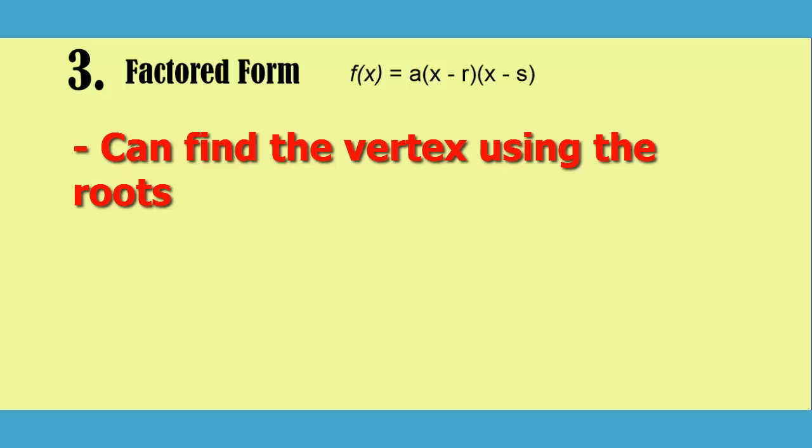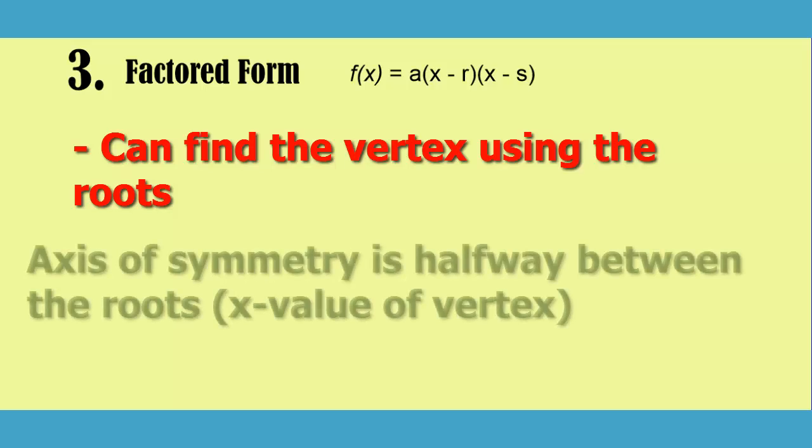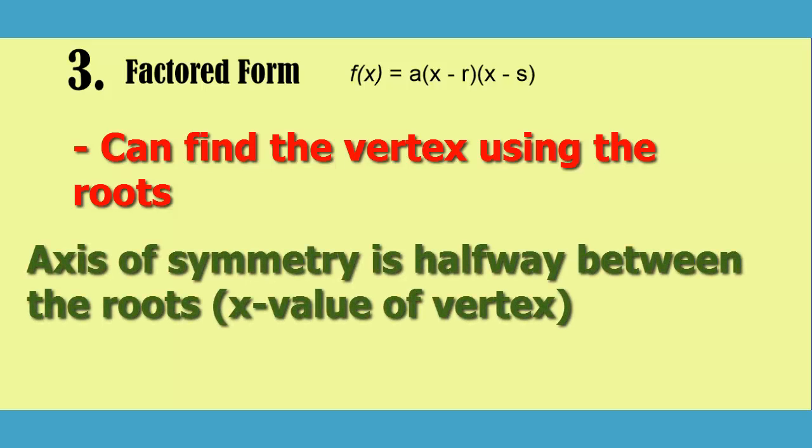Since we know the two roots are the x-intercepts, we know the axis of symmetry of our parabola has to lie halfway between them. And from there, we can take that x value of the axis of symmetry and plug it into our equation so that we can solve for the y value, which would give us our vertex.